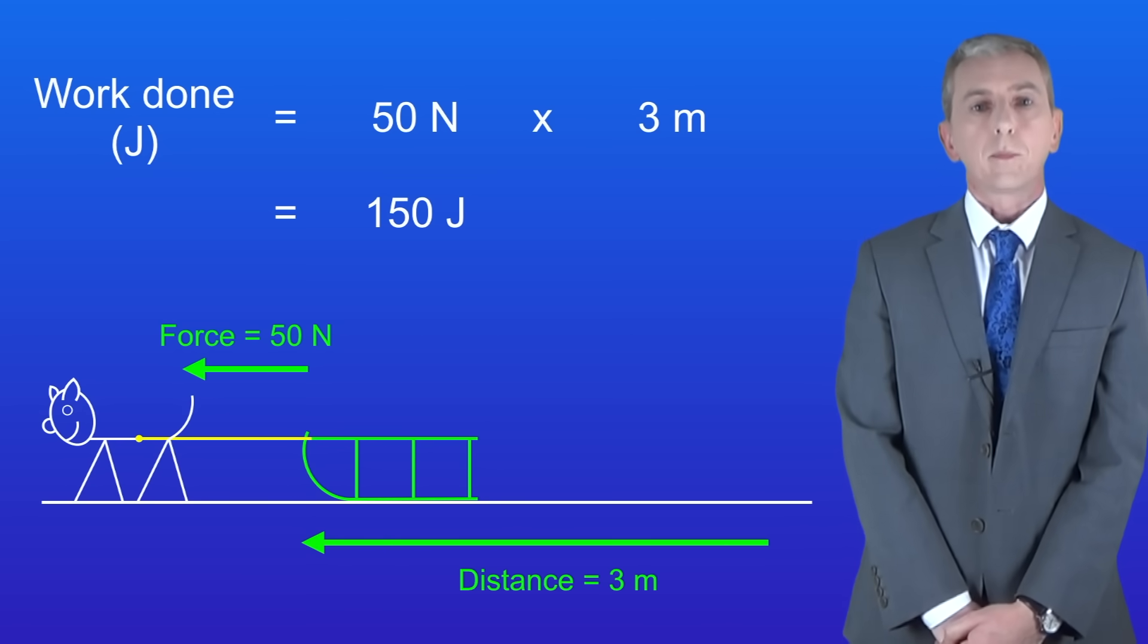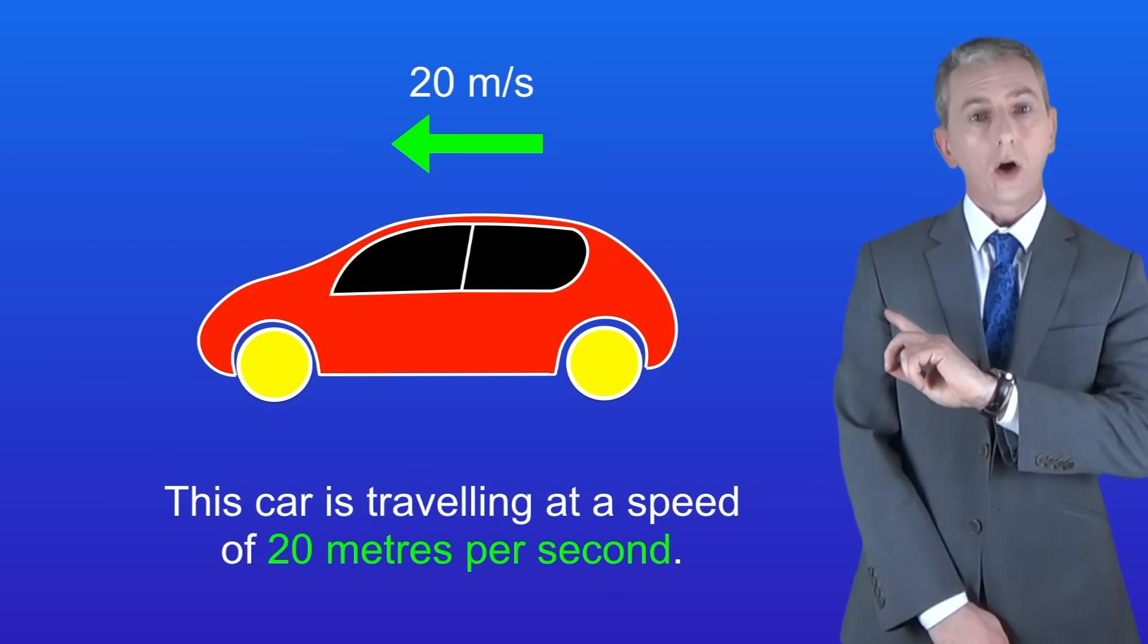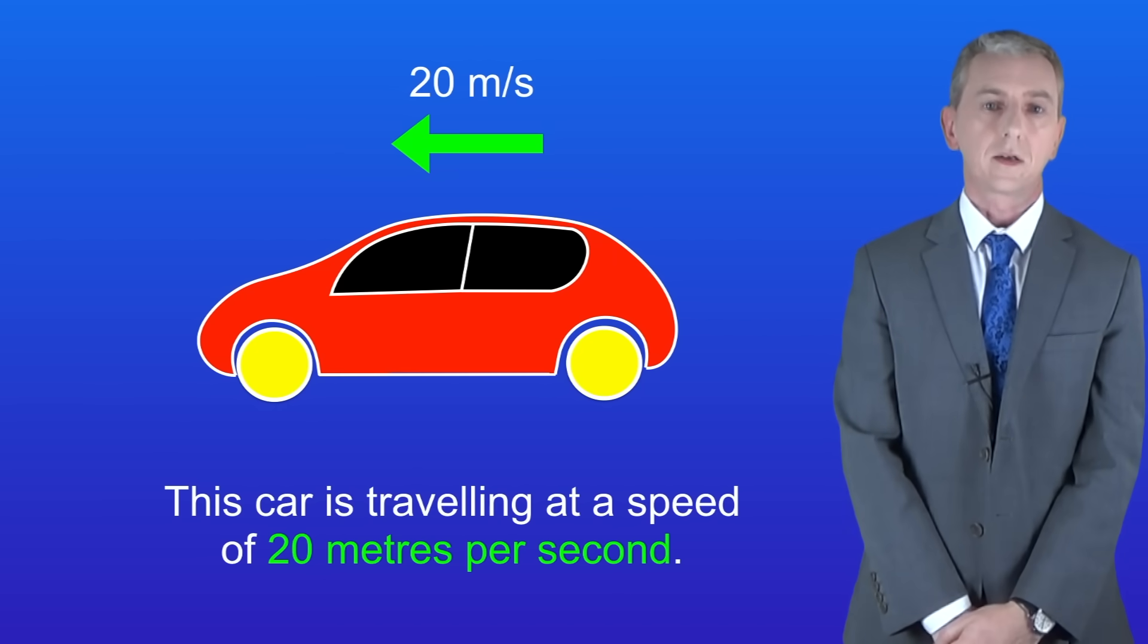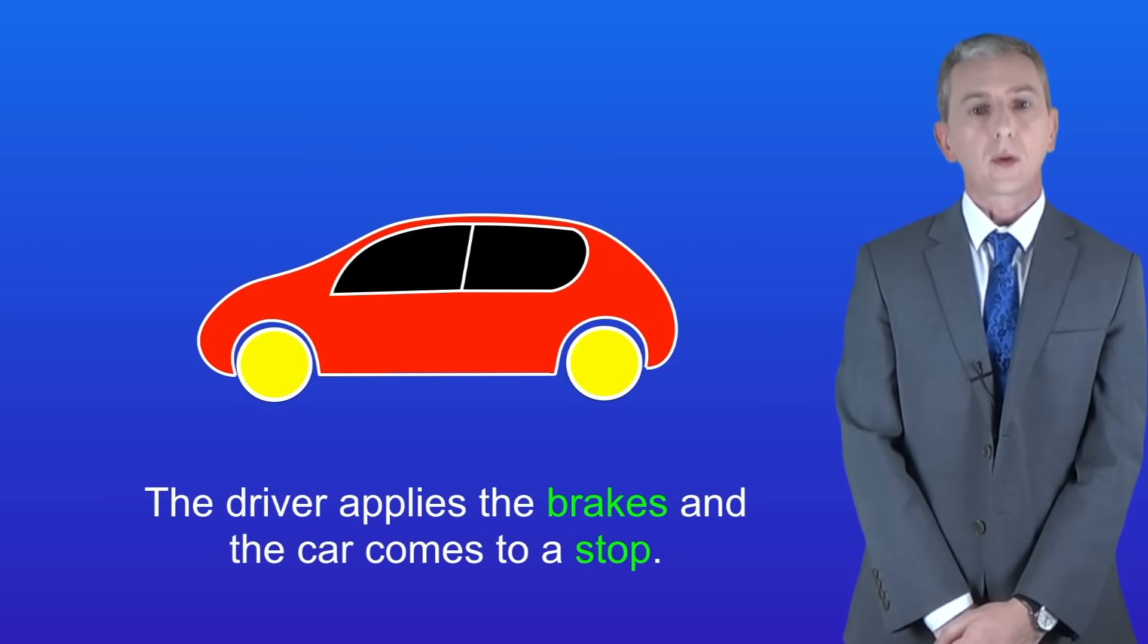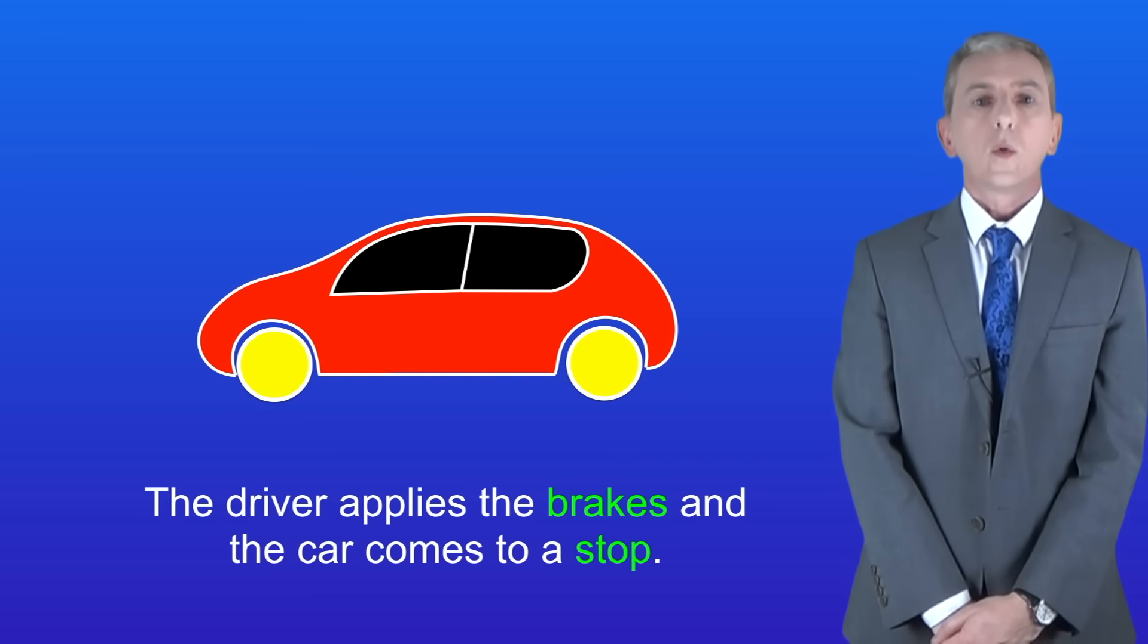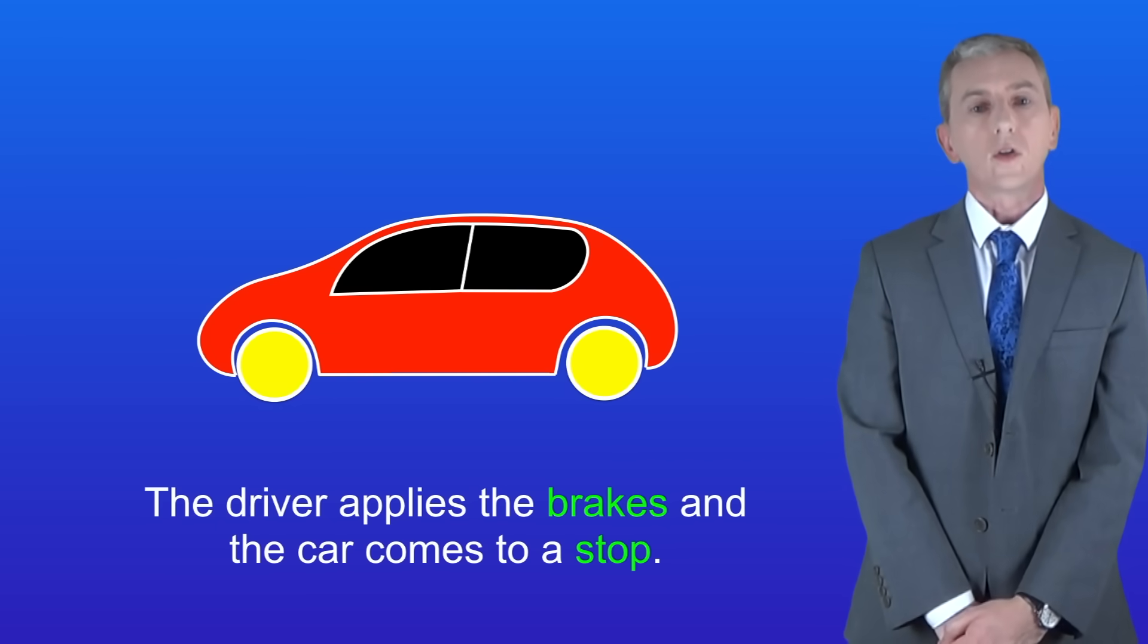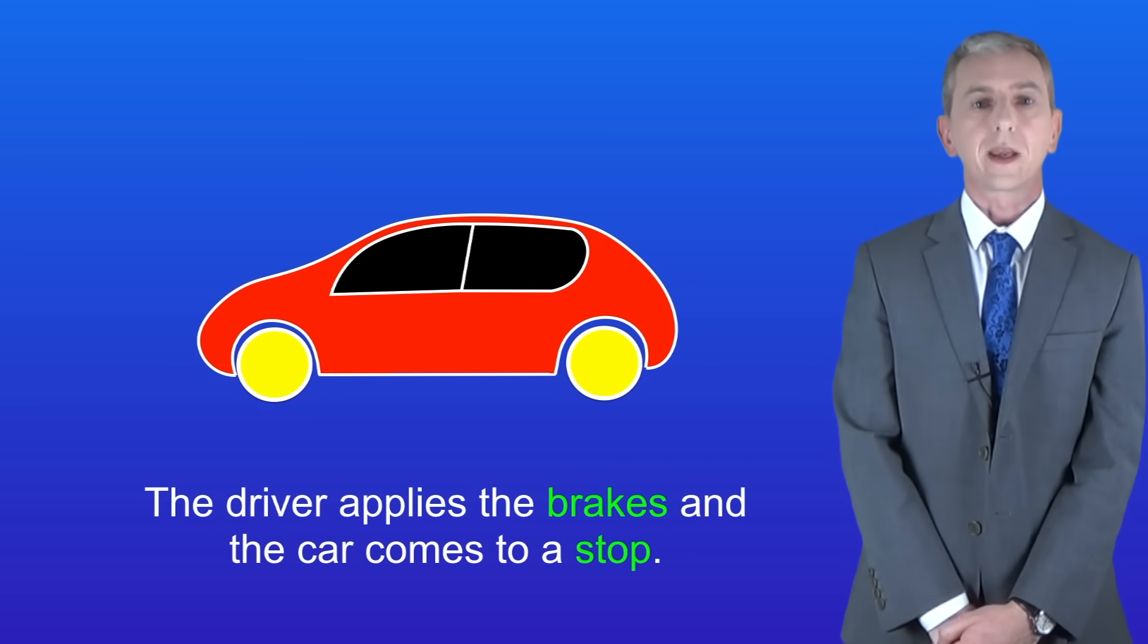This shows a car traveling at 20 meters per second. The driver applies the brakes and the car comes to a stop. We're going to calculate the work done here but first we need to look at what happens when a car brakes.